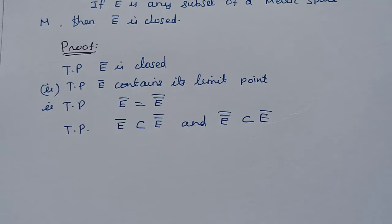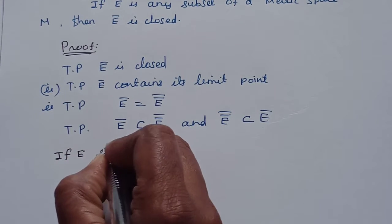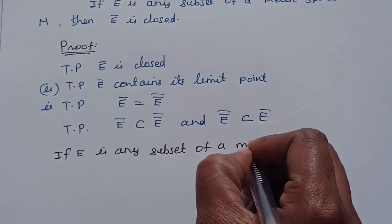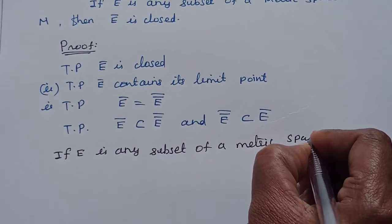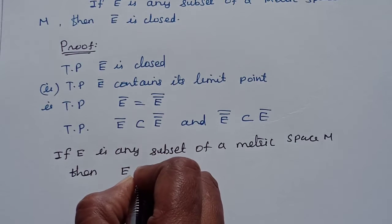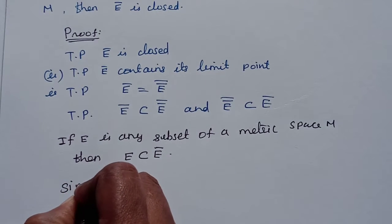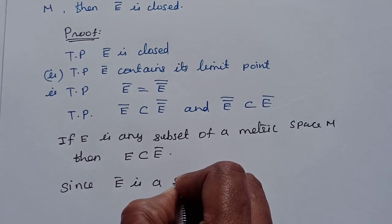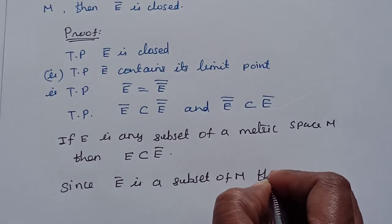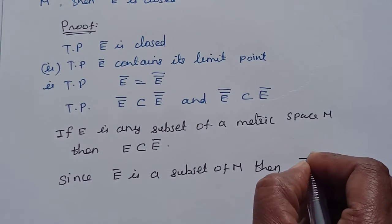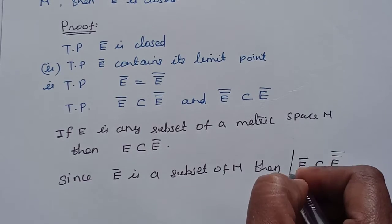Let's recall a known result: if E is any subset of metric space M, then E is a subset of E-closure. From this it follows that E-closure is contained in E double closure. This is an obvious result we need to know going forward.